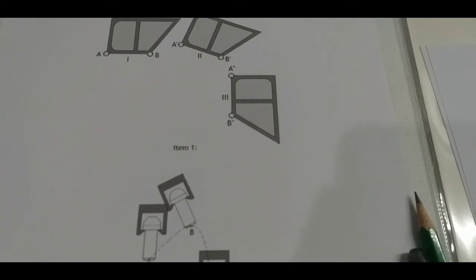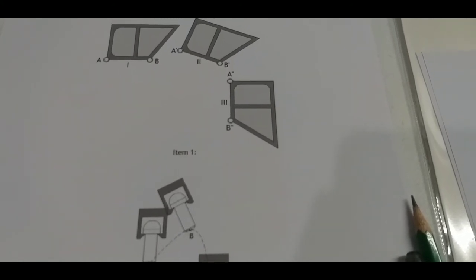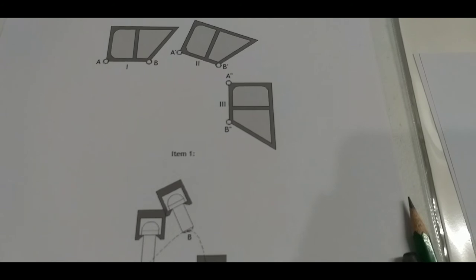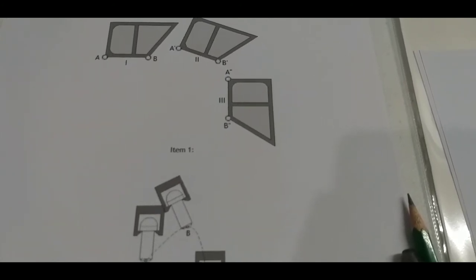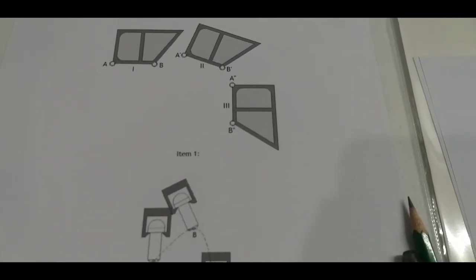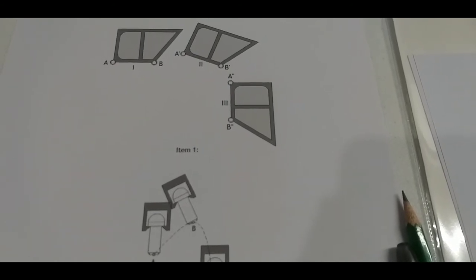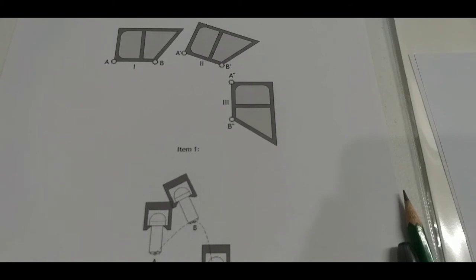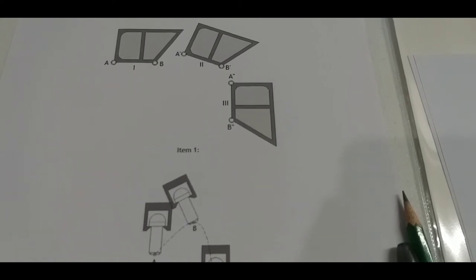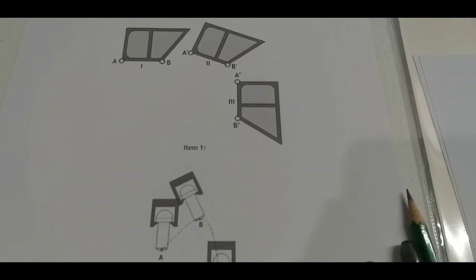Through the given three positions A and B will be the pivot points for your attachments. Use the given scale and determine the dimensions and initial configuration of the links of the four-bar mechanisms necessary for this application.